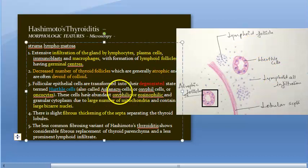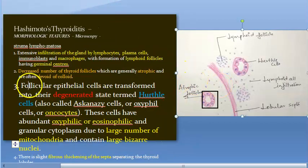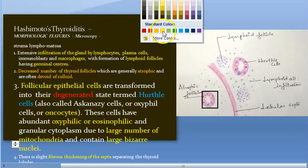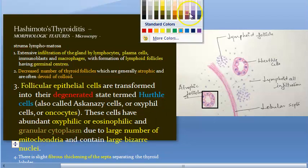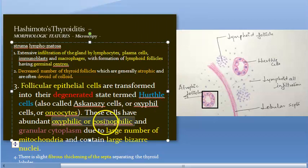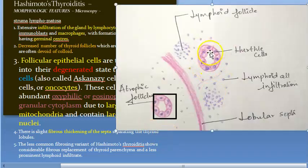The Hurthle cells are important to explain in full. They are follicular epithelial cells which are degenerated. Their characteristics are: they are eosinophilic or oxyphilic, they have granular cytoplasm, they have a large number of mitochondria, and they have large bizarre nuclei. In the exam, you should draw an atrophic follicle lined by Hurthle cells showing large bizarre nuclei, large number of mitochondria, granular and abundant cytoplasm that is eosinophilic or oxyphilic.